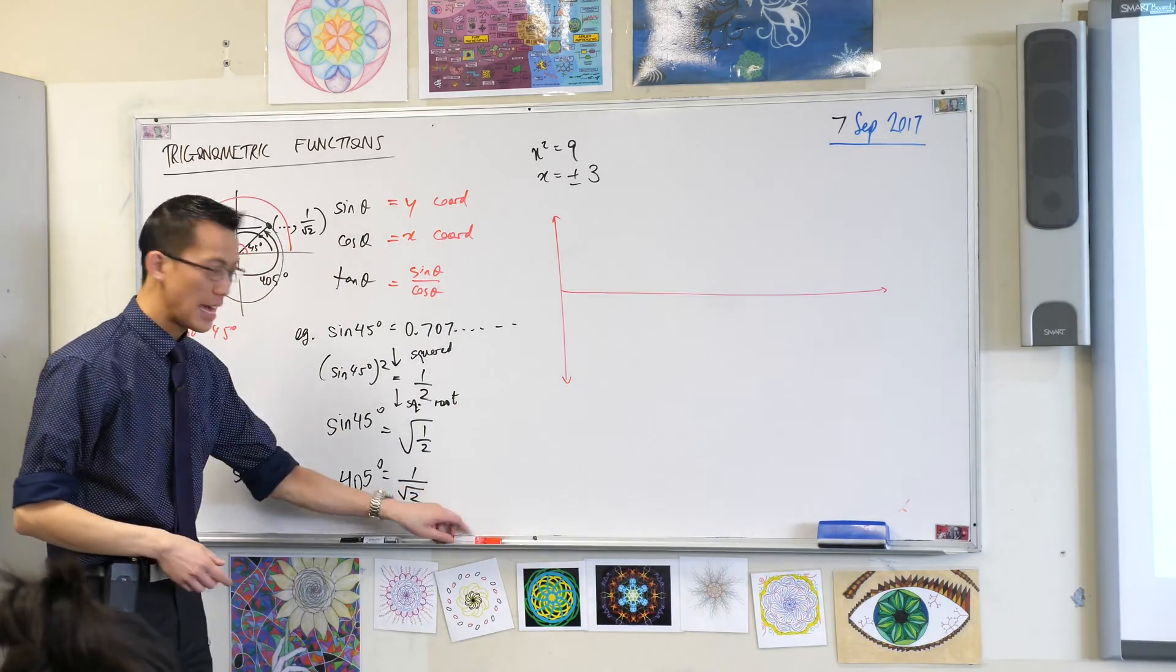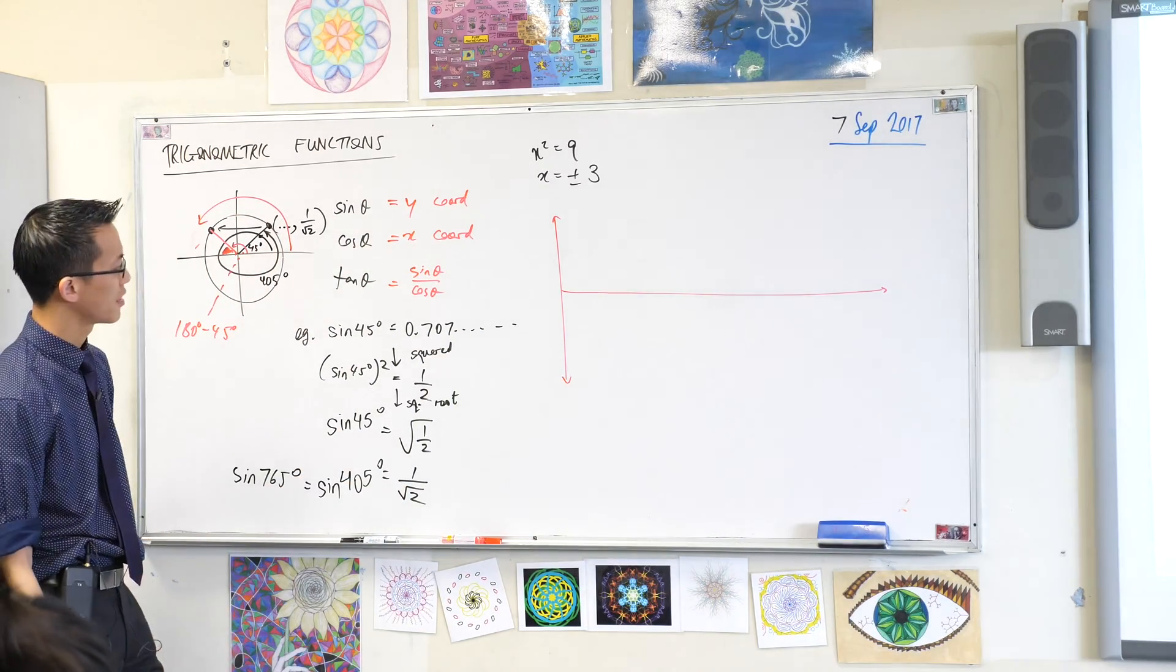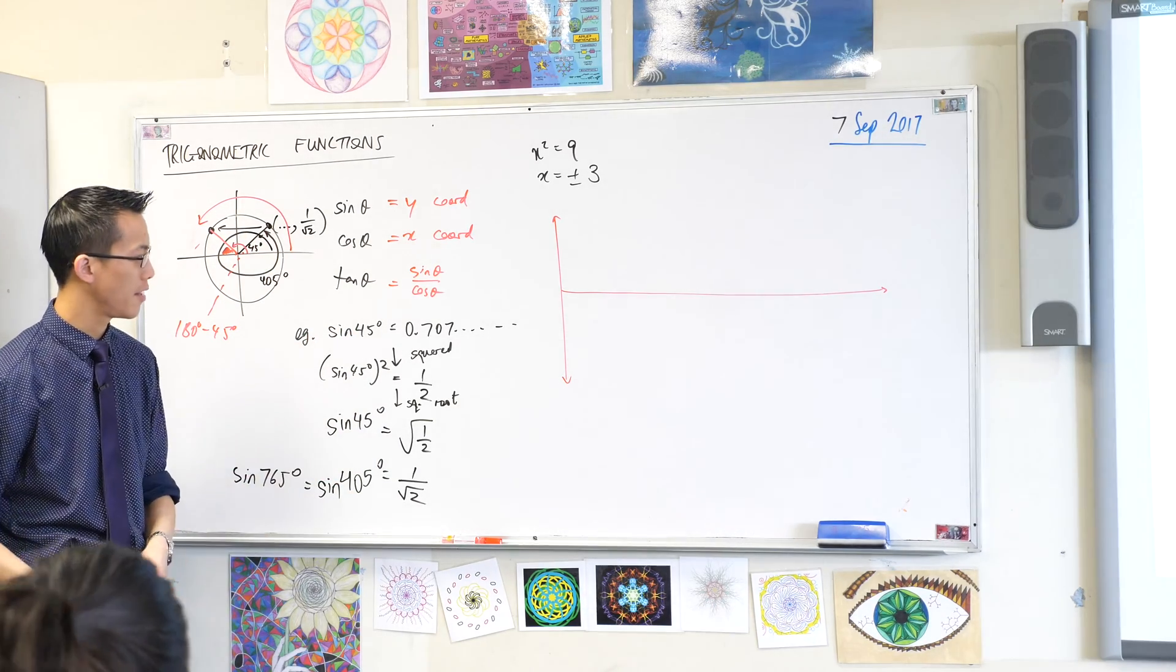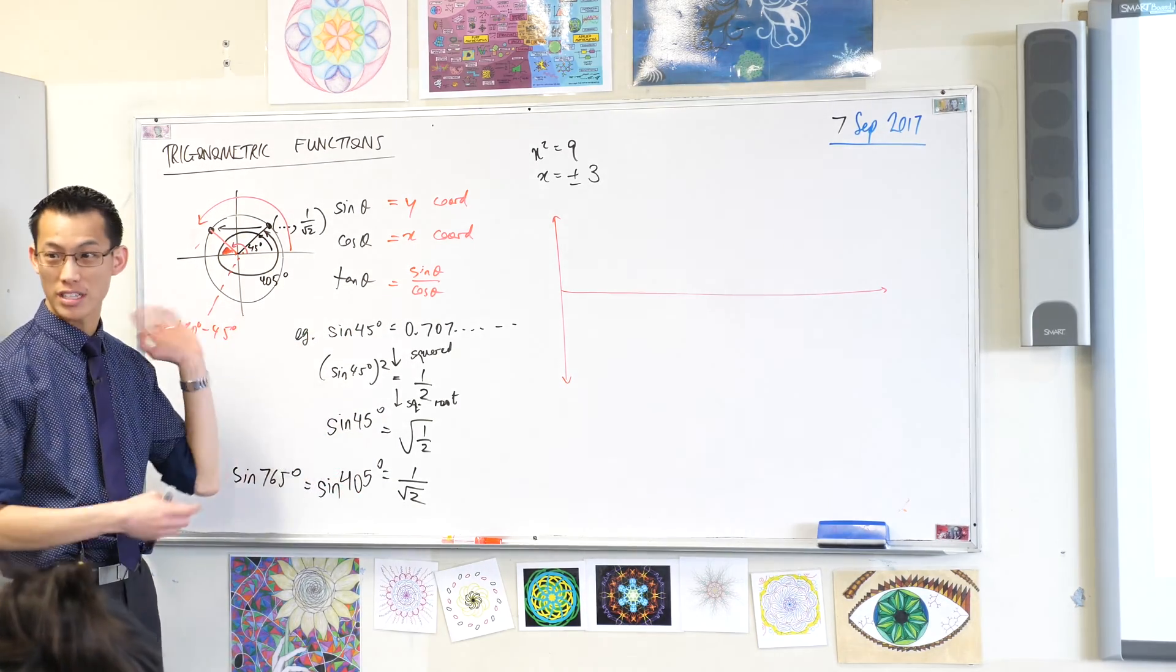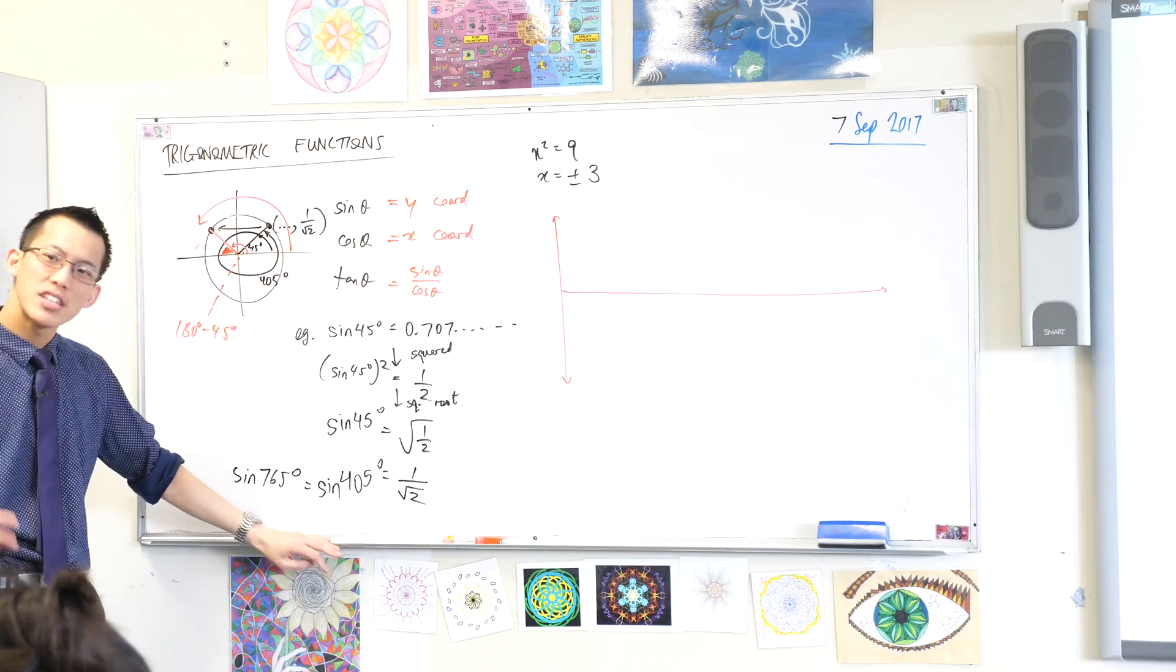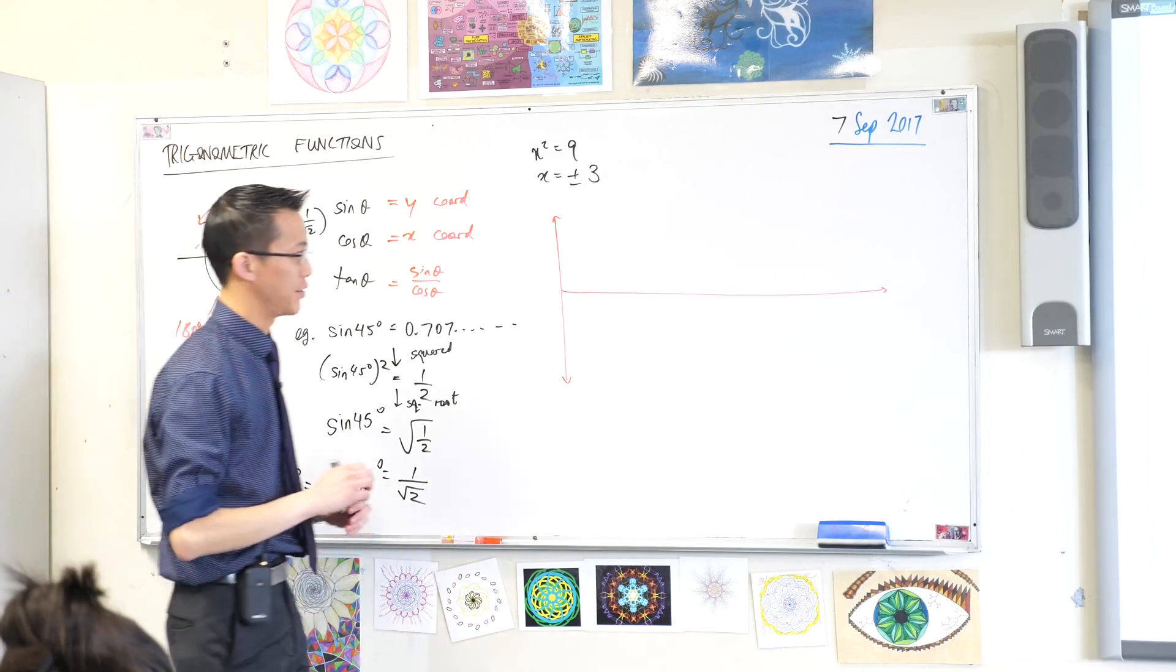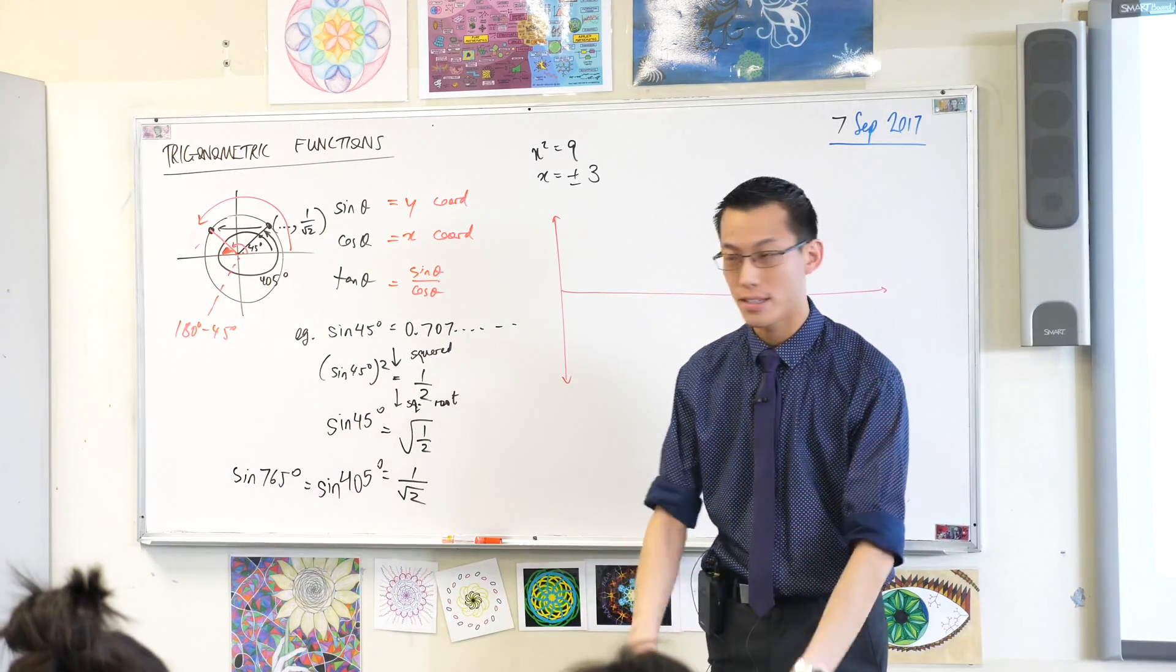So what we want to do is try and piece together, we've got all these different values of theta, all these different angles that we can put into sine. What's it going to look like? Now you already know some of these values, right? Some of them are really easy to work out.